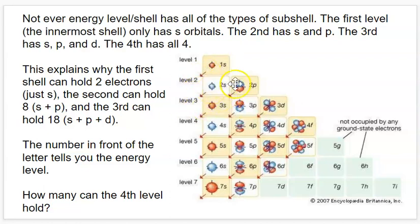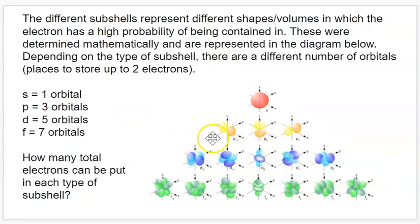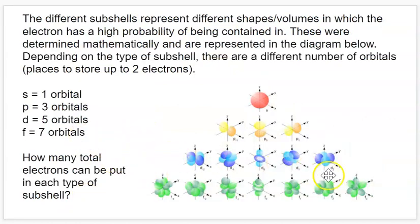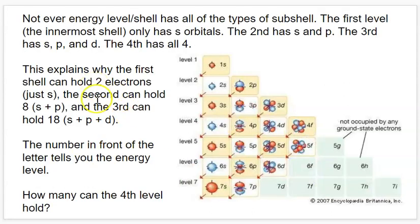For the second level, it has S and P. There are three P orbitals within the P subshell, and if each of them can hold two, that's six from the P. So it has two from the S and six from the P, which gives us eight total. The third has S, P, and D. D has five different orbitals, and if each of them can hold two, that's 10. So we have 10 plus six plus two — a total of 18 for the third level.